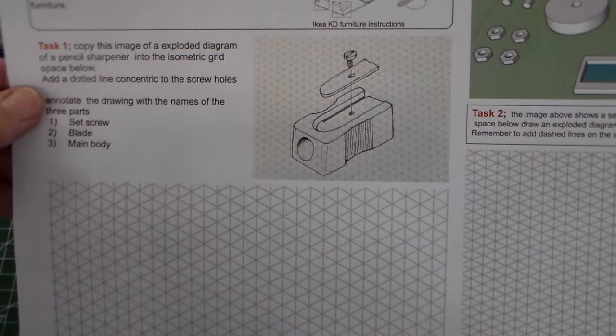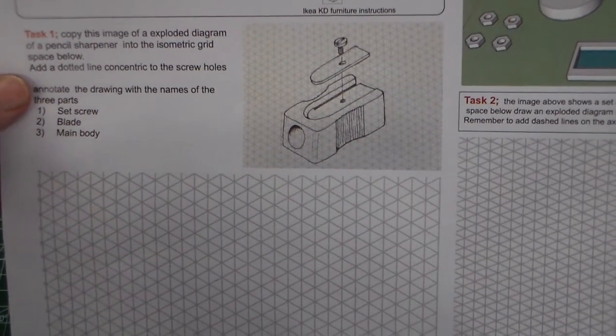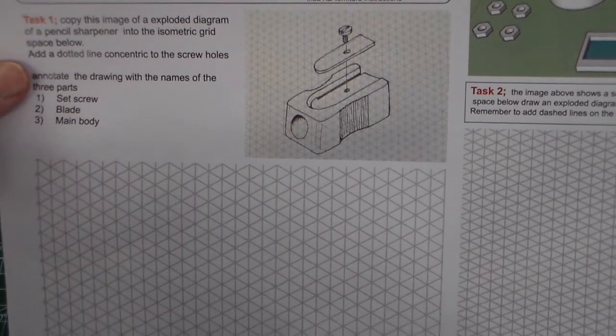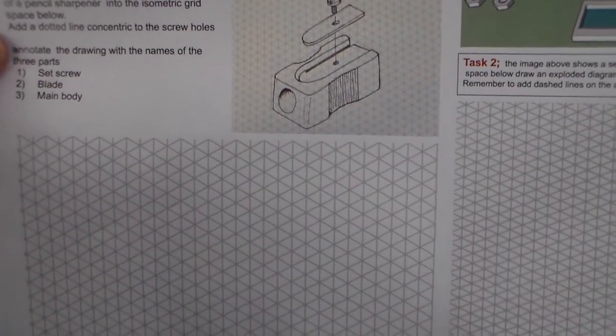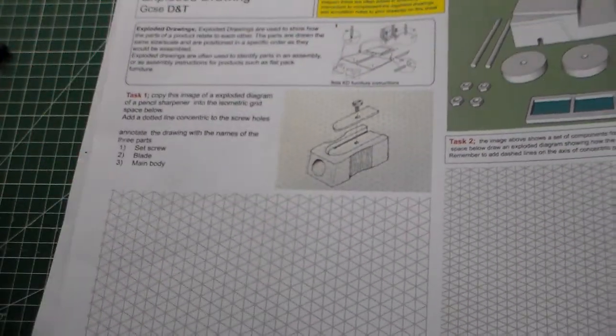The first task is this one, task one. Copy this image of an exploded diagram of a pencil sharpener onto the isometric grid space below. Add a dotted line concentric to the screw holes.